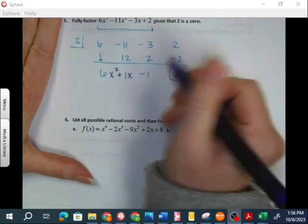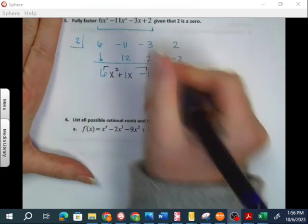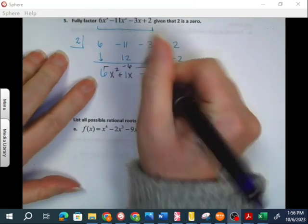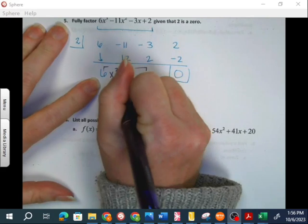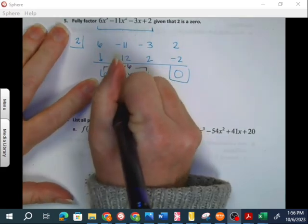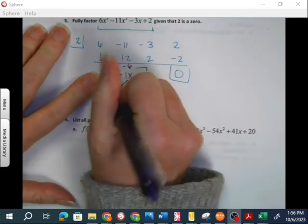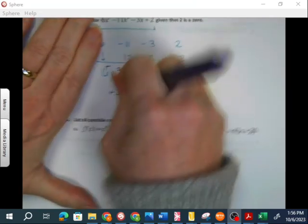And I'm going to factor that, so factoring my way. Multiplying first and last I get negative 6. Factors of negative 6 that would add to 1, that would be positive 3x and negative 2x.